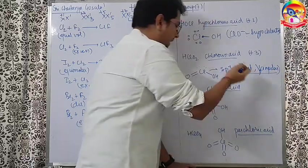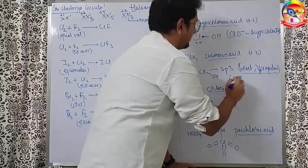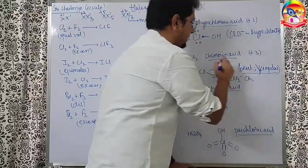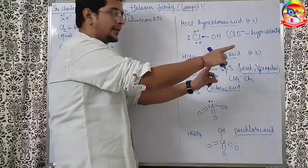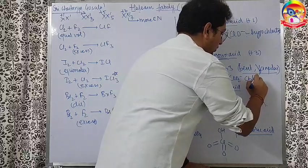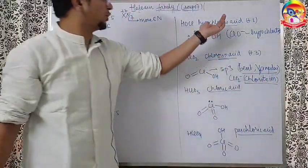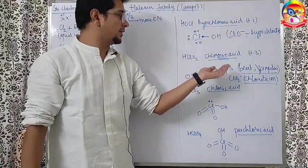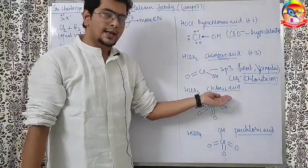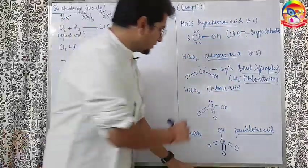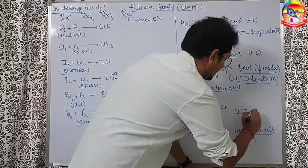So its anion that is ClO2- is known as, because it is chlorous acid, -ous acid anion is -ite, so chlorite. Like here it was hypochlorous, so hypochlorite, it is chlorous chlorite. -ic acid anions are -ate. In the same way, ClO3- will come, it is chlorate ion.